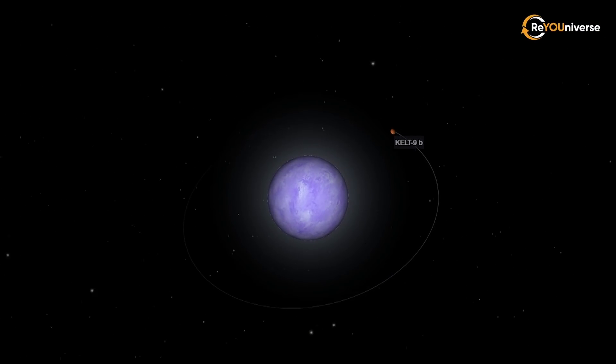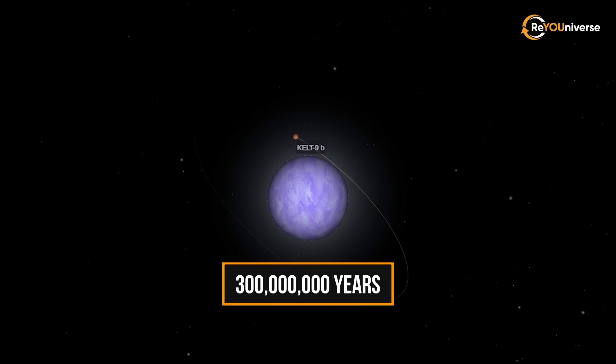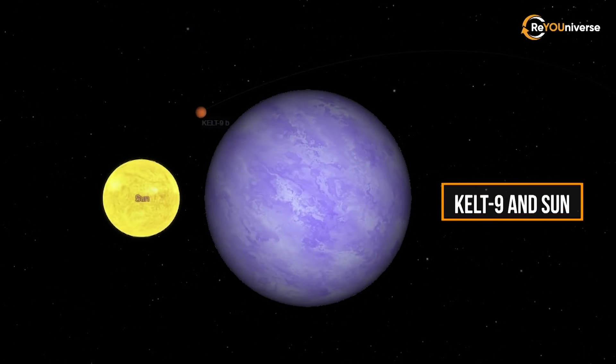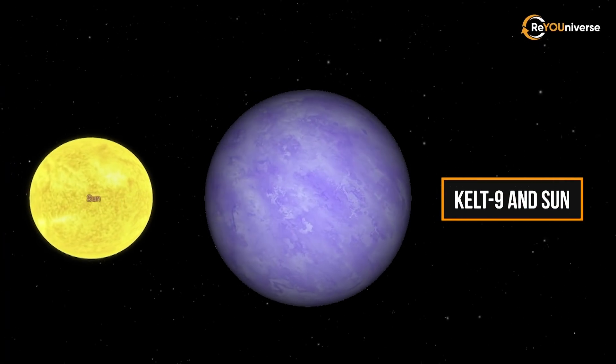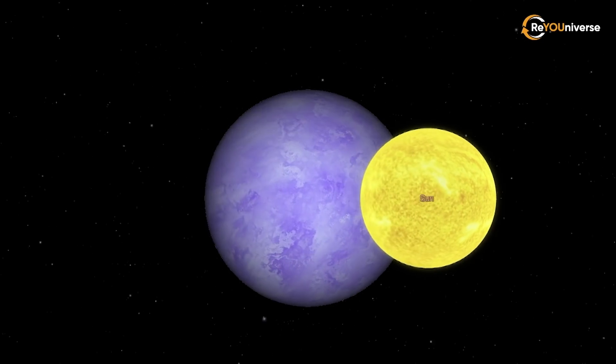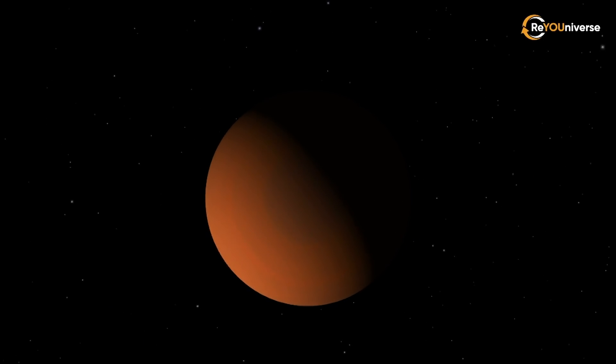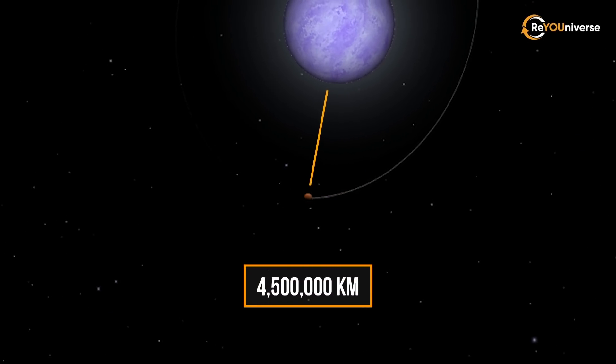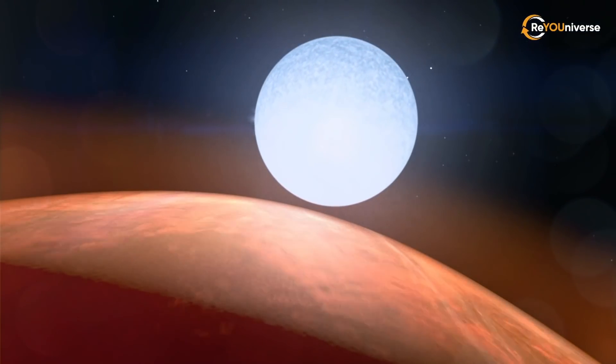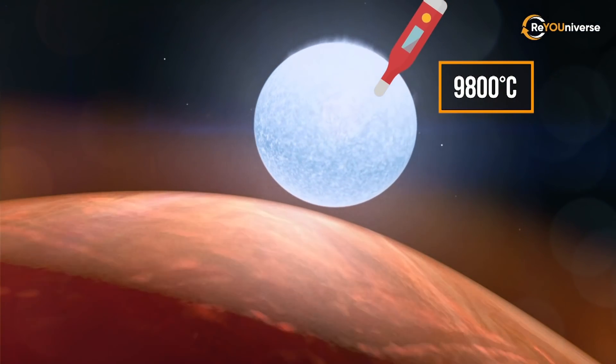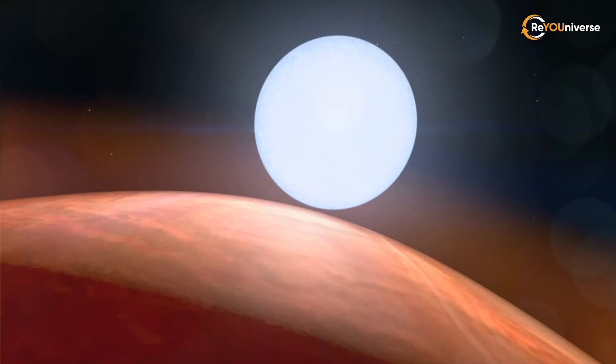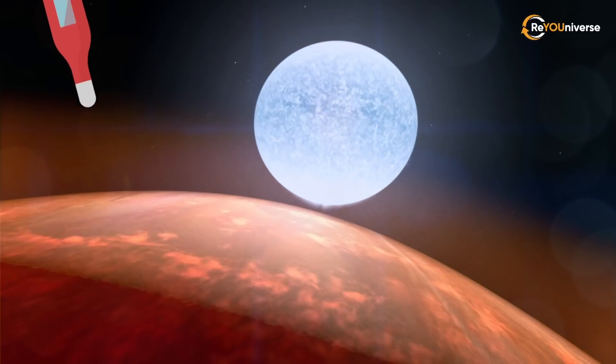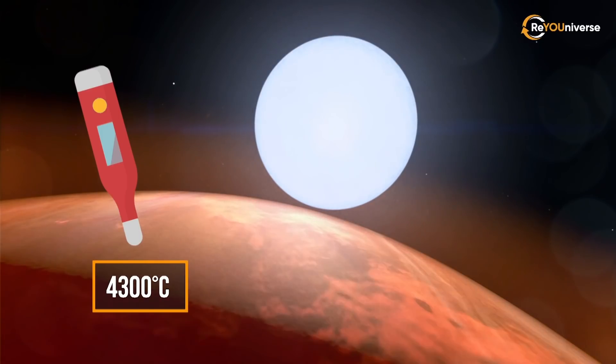The star KELT-9 is only 300 million years old. It is more than twice as large and almost twice as hot as our Sun. The exoplanet orbits its parent star at 4.5 million kilometers. The star's temperature is 9,800 degrees Celsius, and the temperature on the planet itself reaches a whopping 4,300 degrees Celsius.